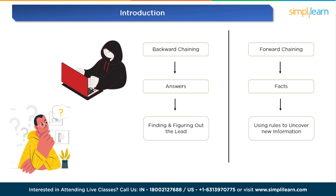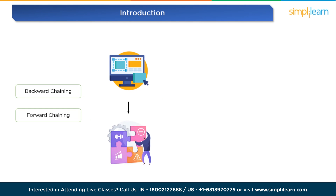Imagine you are solving a mystery in the world of computers. Backward chaining is like starting with the answer you want to find and figuring out the clues that lead to it. On the other hand, forward chaining is like starting from the facts you already know and using the rules to uncover new information. Both techniques are like paths that computers take to solve problems — one starts with the goals and finds the path to it, while the other starts with what it knows and keeps adding to it until the solution becomes clear. These strategies make AI systems smart and capable of cracking intricate problems.